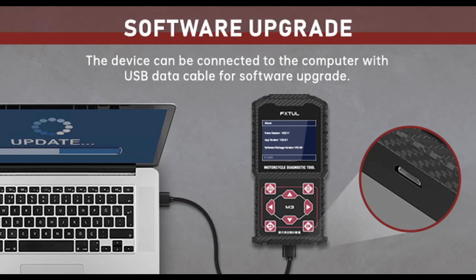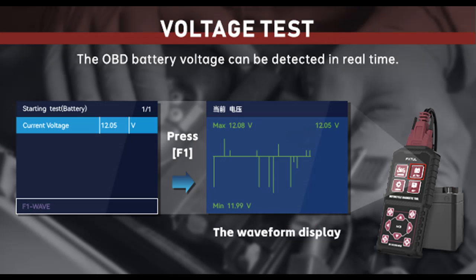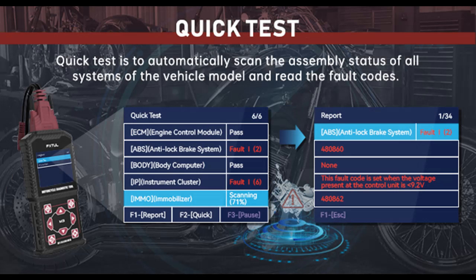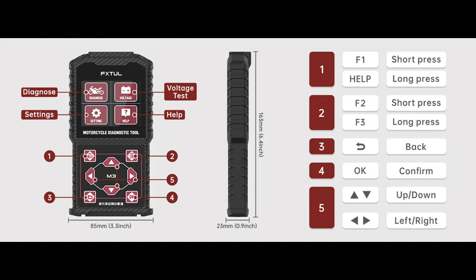Free Software Upgrade: Connect the device to the computer and wait for the device to be recognized. After recognition is successful, a new drive symbol will appear on the computer. Open this and replace the Diagnose folder in the drive with the downloaded Diagnose Upgrade folder, then power on again. The updated files can be obtained by contacting customer service.